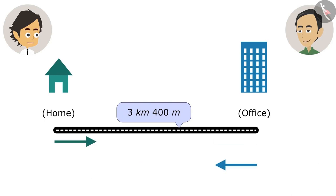You go 3 kilometers 400 meters to go to the office, and then 3 kilometers 400 meters back. So we will add these two numbers. Alright, now add. But I cannot understand how they will be added.